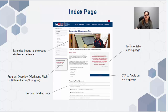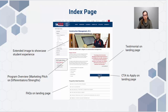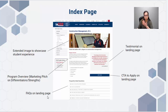So we have the program overview, we have a testimonial on the landing page. There's also a student success page that will showcase student testimonials and experiences. CTA means call to action — the call to action button to apply will be on every single page and will be provided to you on our template. And then lastly the FAQs, or frequently asked questions, on the landing page.